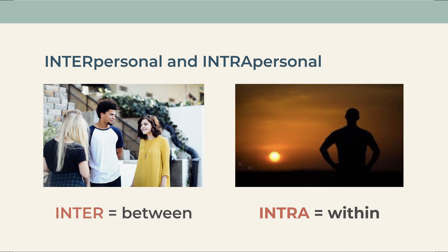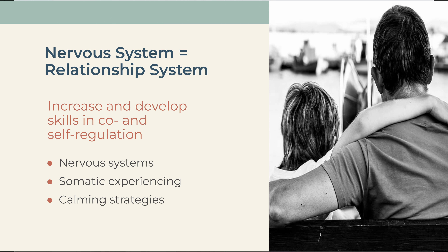In our classes, we teach both interpersonal skills and intrapersonal skills — what is happening inside you and your relationship with yourself. The nervous system really should be called the relationship system because it is so formed and founded by relationship. Humans are social, and our nervous systems communicate with each other. We are connected. In our classes, we want to help both teens and young adults and their parents or caregivers increase and develop their skills in co- and self-regulation through nervous system education and somatic experiencing — somatic means body. How do feelings feel in the body? What do those feelings mean, and why is it important to pay attention to them?